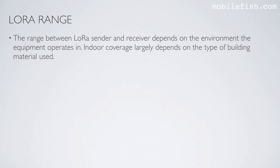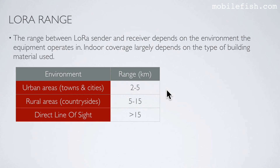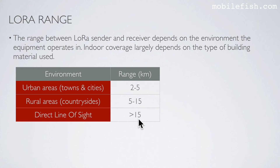The range between a LoRa sender and receiver depends on the environment the equipment operates in. Indoor coverage largely depends on the type of building material used. To give you an indication: in urban areas the range is between 2 to 5 km, in rural areas 5 to 15 km, and if there are no obstacles and you have direct line of sight, you can achieve a distance of greater than 15 km. Please note these ranges can only be achieved if certain conditions are met, which will be explained in detail later in this video series.